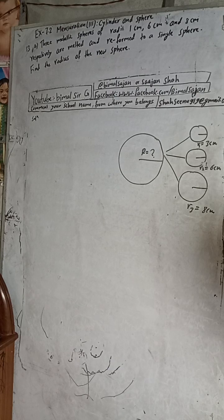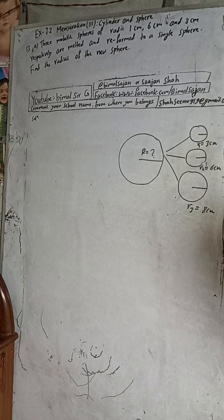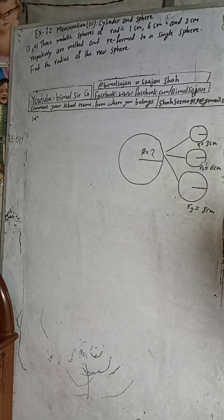Hi class 9 and 10 students, welcome back to Bimalsarji YouTube channel. This is question number 13a, exercise 7.2, mensuration third part — cylinder and a sphere, class 9 compulsory mathematics. In the Bimalsarji YouTube channel playlist you can get class 9 and 10 solutions of optional math, compulsory math, and science as well, so check the playlist properly.